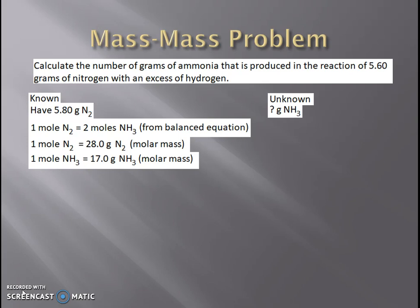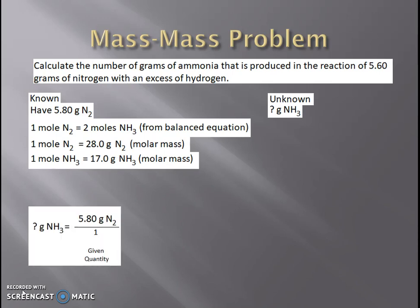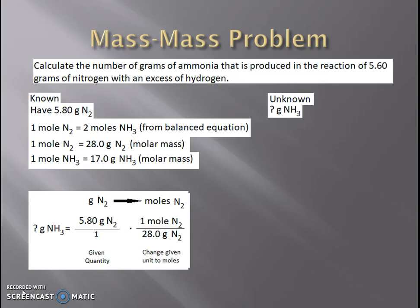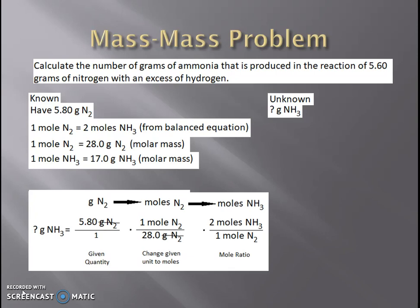The rest is just following the units to make them reduce out and get to the units I want. I take my given — 5.6 grams of nitrogen over 1 — and I want to change those grams of nitrogen into moles of nitrogen, so I use the molar mass conversion factor: 1 mole of nitrogen over 28 grams of nitrogen. Grams of nitrogen reduce out, leaving me with moles of nitrogen. Now I can get from moles of nitrogen to moles of ammonia using the mole ratio, with moles of nitrogen in the denominator. Moles of nitrogen reduce out, leaving me with moles of ammonia.